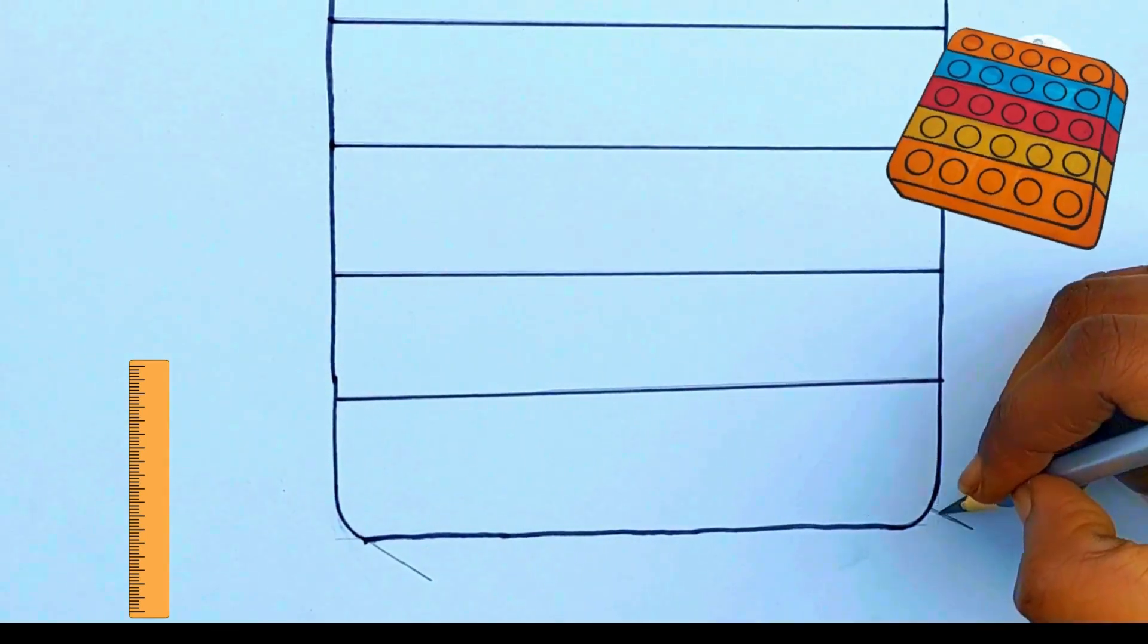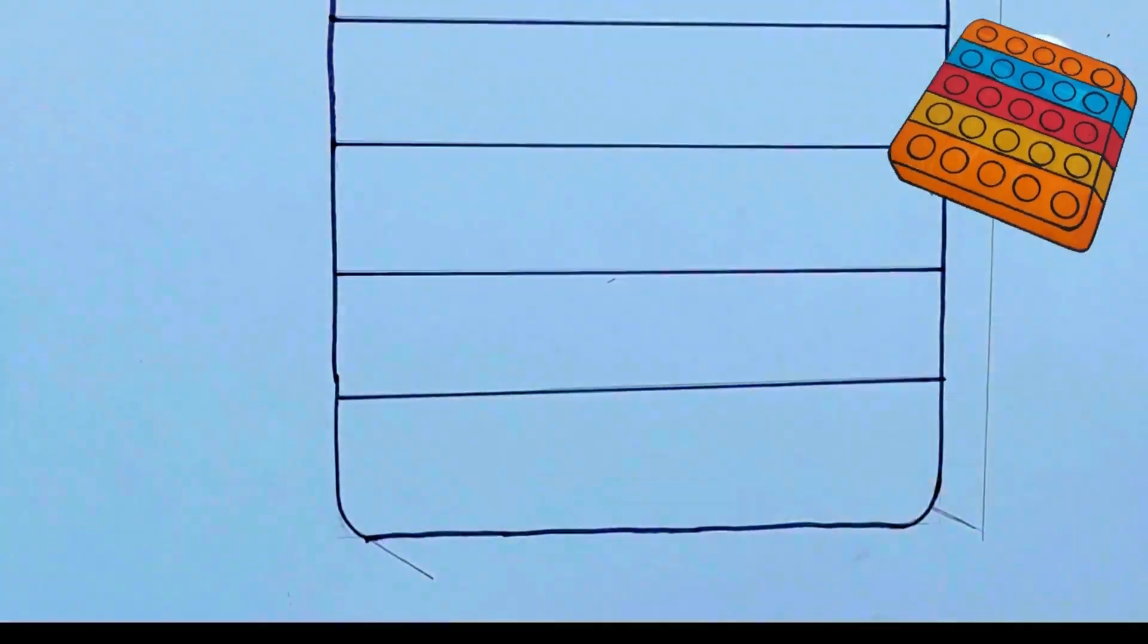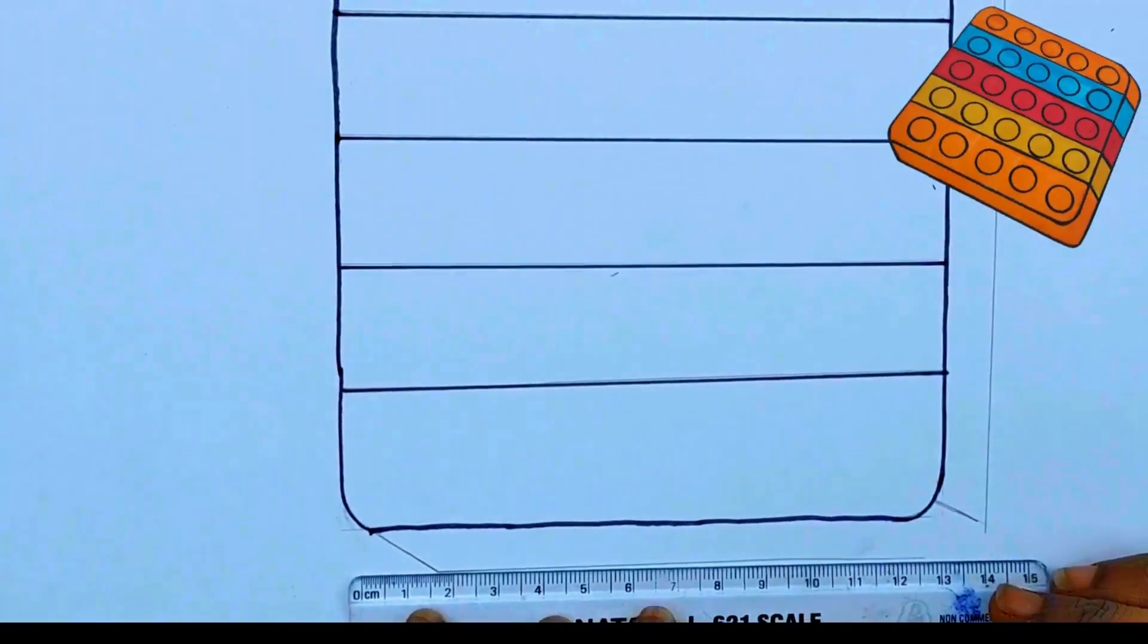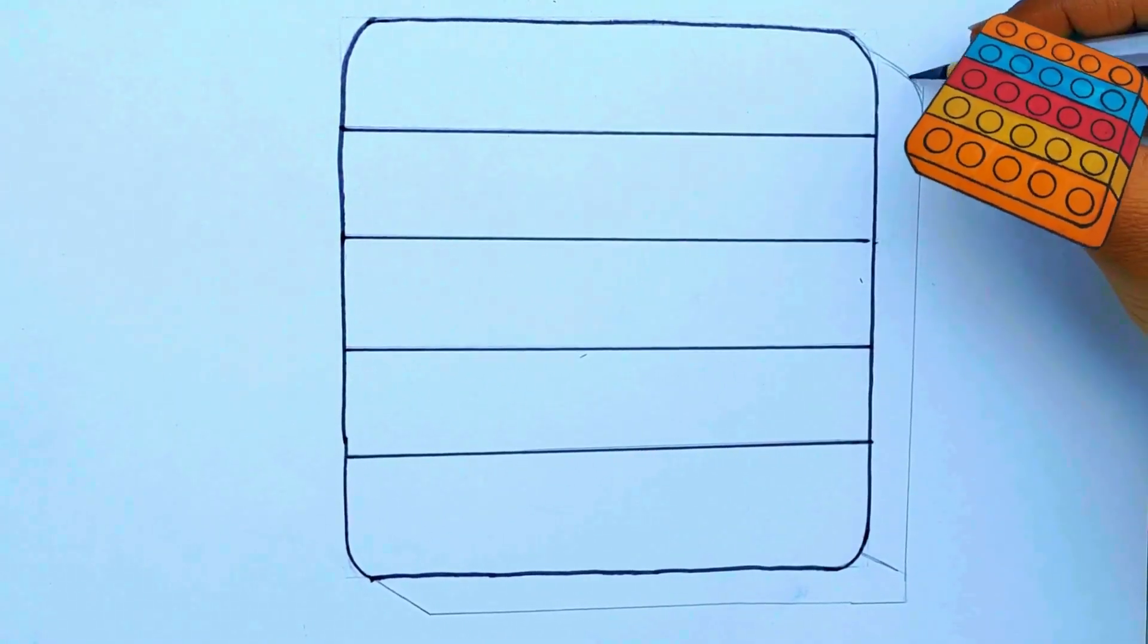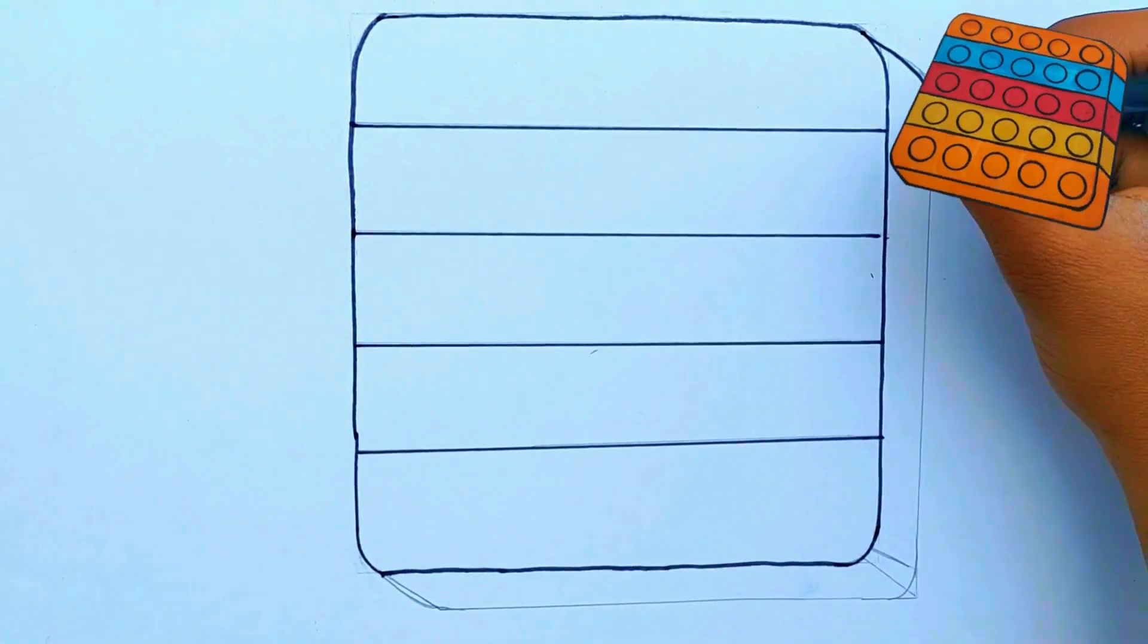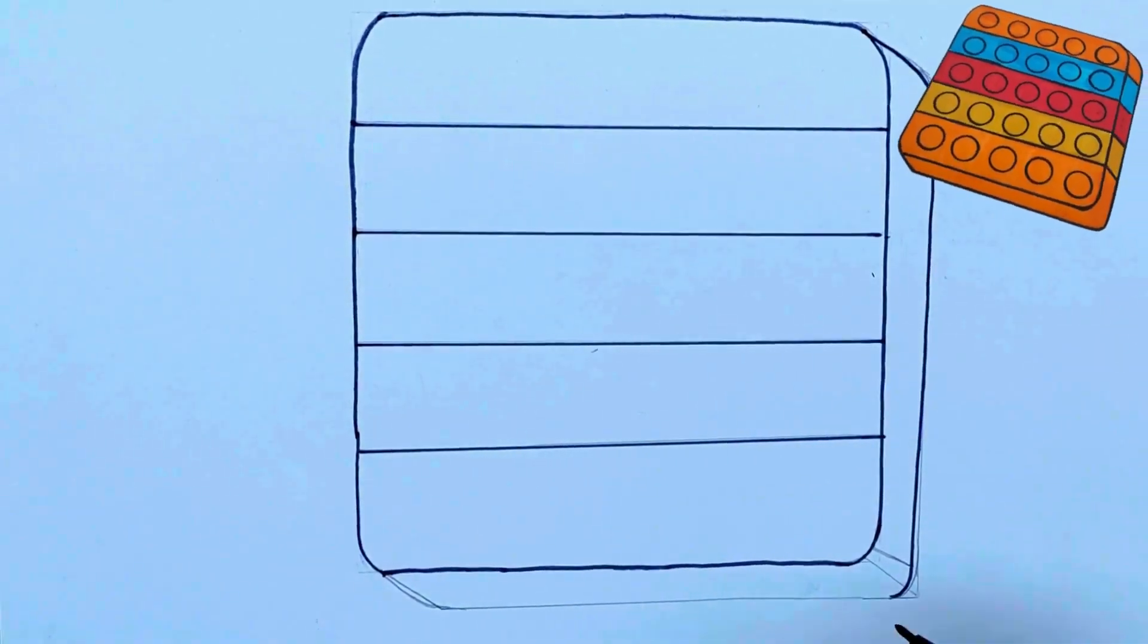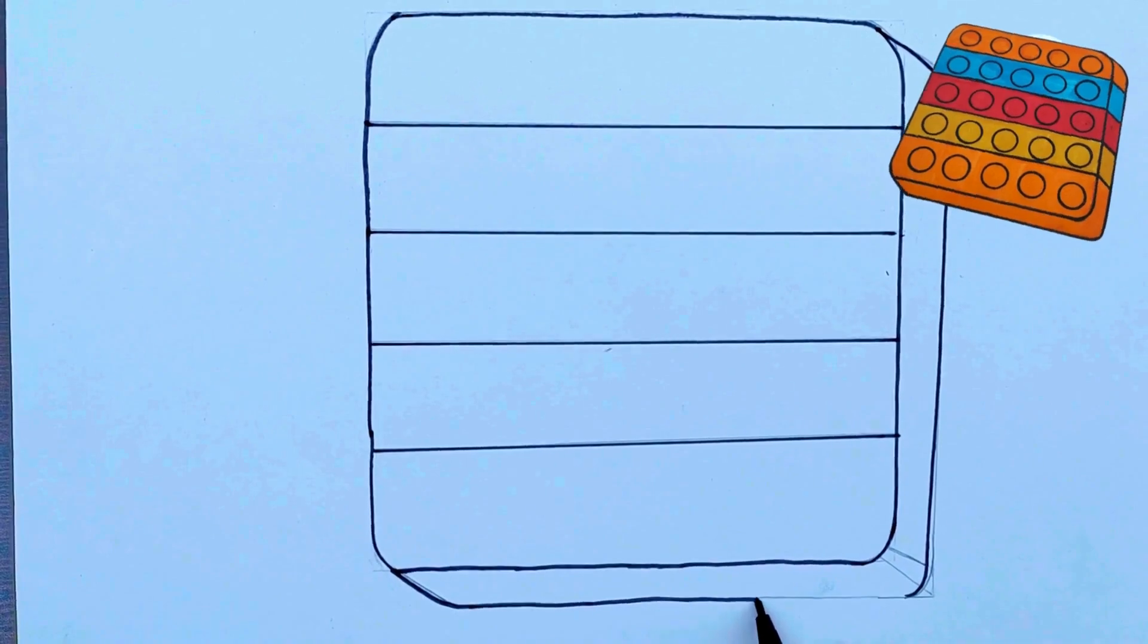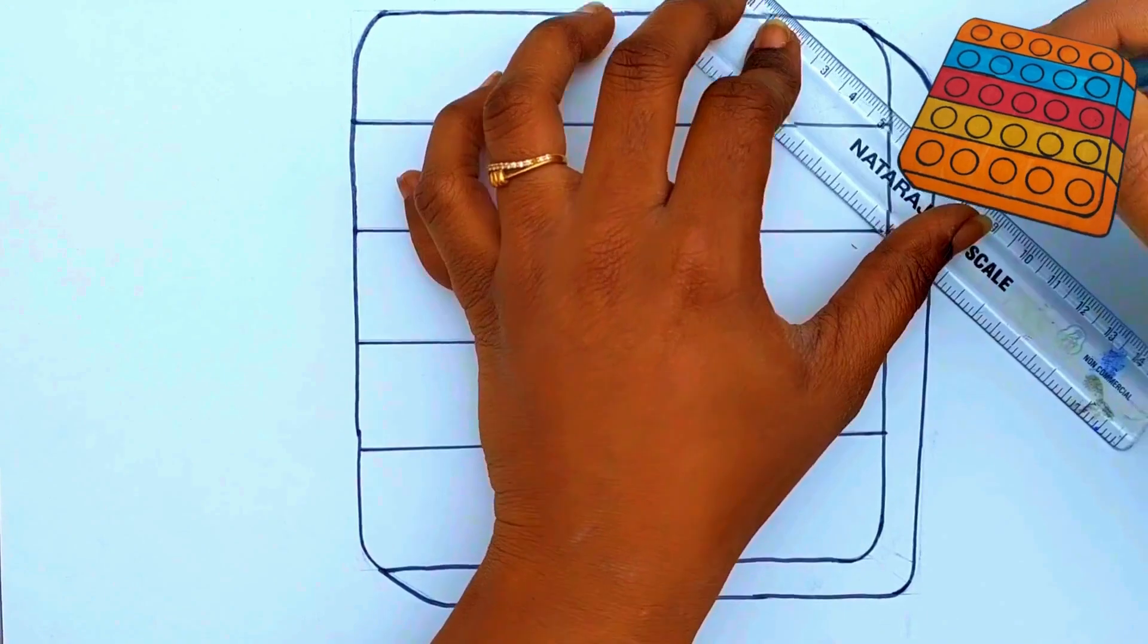Draw two small slanting lines and join it as shown in the video. Again highlight with sketch pen. Draw as shown in the video.